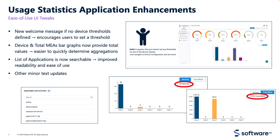The second big change that we implemented is the totals for devices and total MEAs. This is based on some feedback that customers didn't want to have to add all these numbers up — they just wanted to at a glance see the total number.